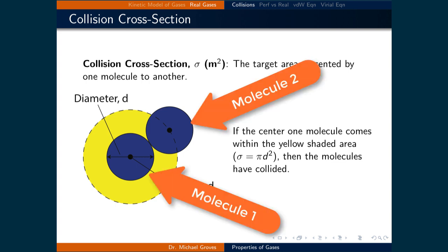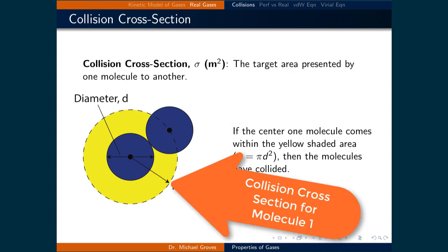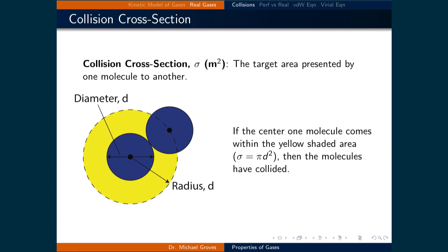In the image, the blue circles are a region that signifies the space that a molecule occupies. The yellow concentric circle shows the collision cross section. Since the center of the second blue circle has entered the collision cross section of the first, then the two have collided.